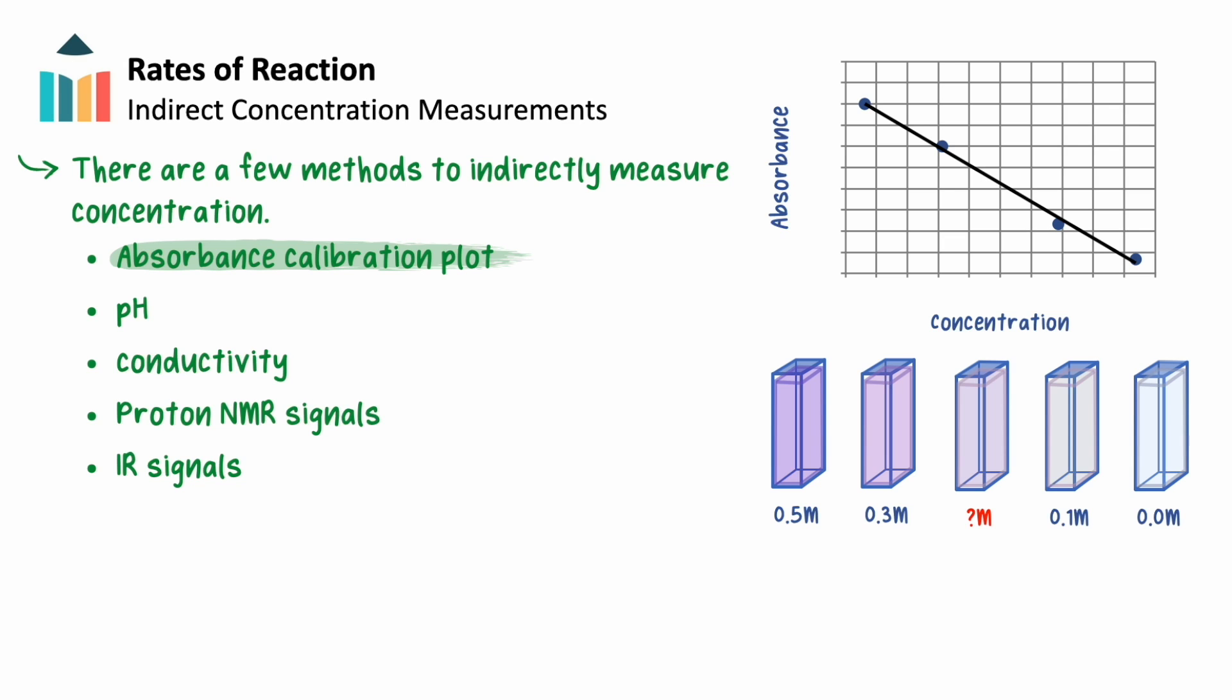The absorbance is measured for several solutions of known concentrations to produce a calibration plot, which can then be used to convert absorbance values to concentration values and determine the unknown concentration of a solution.